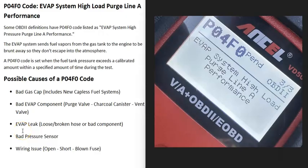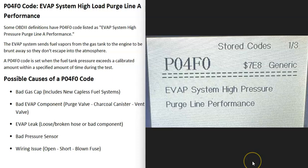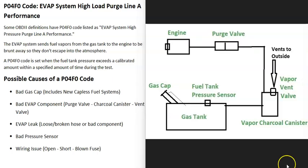Today I'm talking about a P04F0 code — what it is and how you could go about fixing it. A P04F0 code is defined as EVAP system high load purge line performance, and some OBD2 definitions list it as EVAP system high pressure purge line performance.